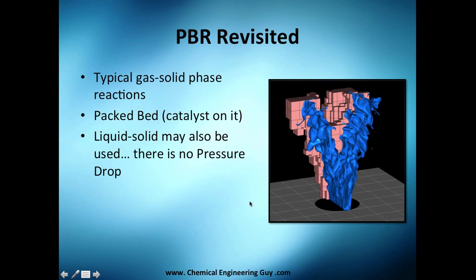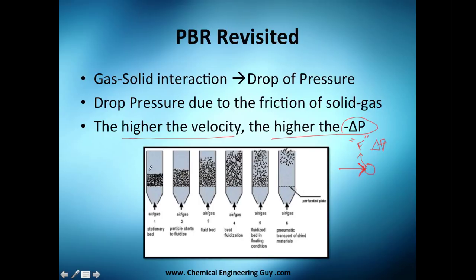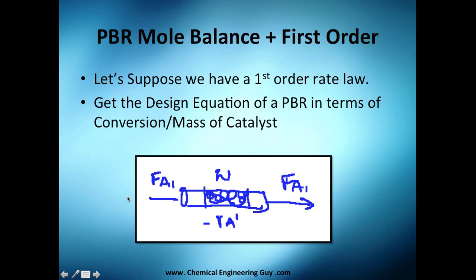The higher the velocity, the higher the pressure drop. Why? Because you're moving fast, and when gas hits a pellet it absorbs the impact and loses force. And force over area is pressure, so there's your pressure drop. Also important: our catalyst bed is packed, meaning it's fixed and doesn't move. When flow fluidizes the bed, everything lifts and moves — that's fluidization, and we don't want that. We want fixed bed reactors. Now let's go to the mathematical model for the first-order PBR reaction.